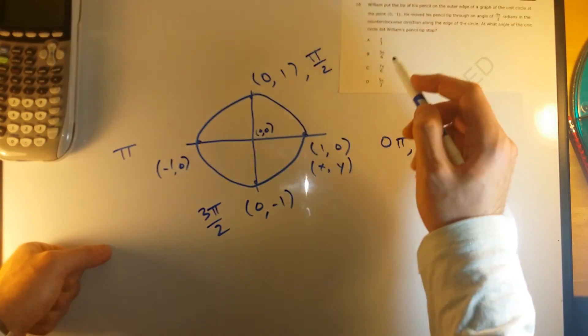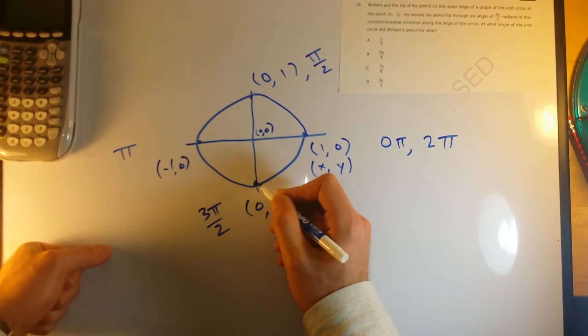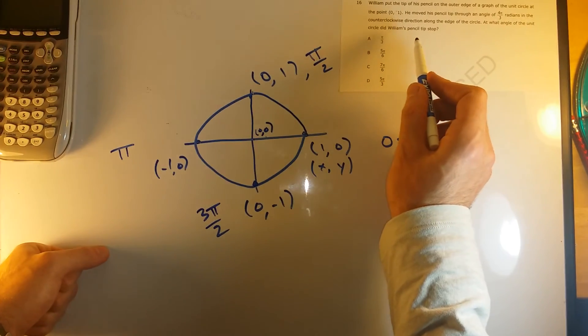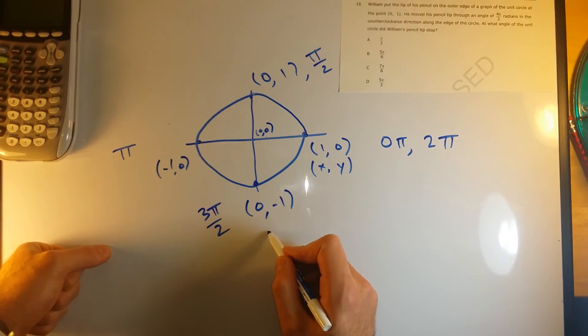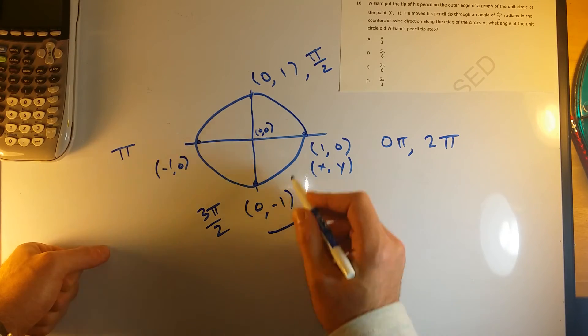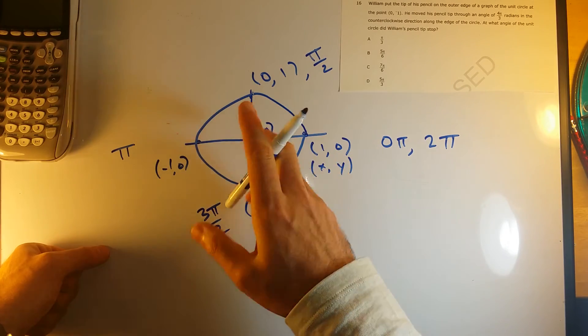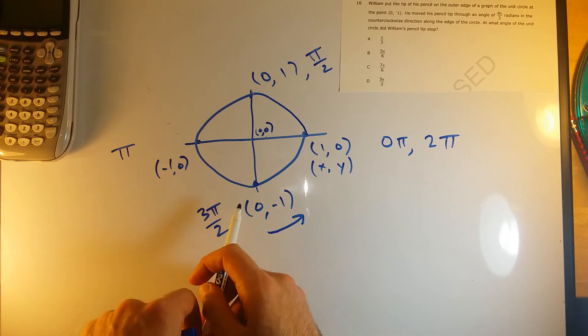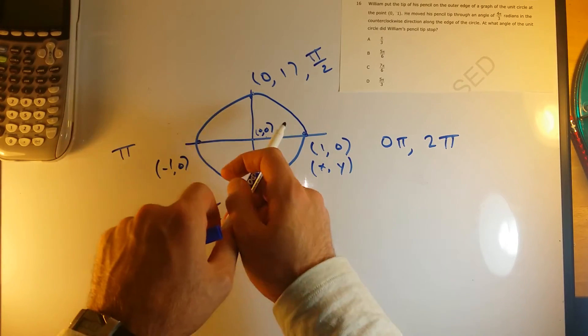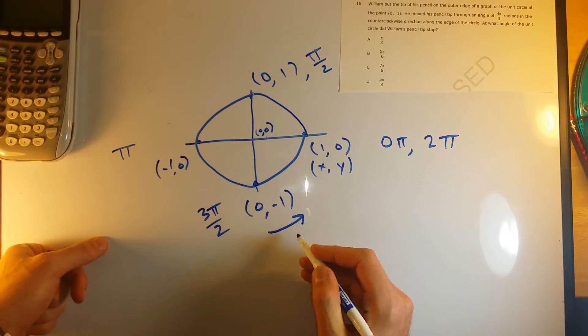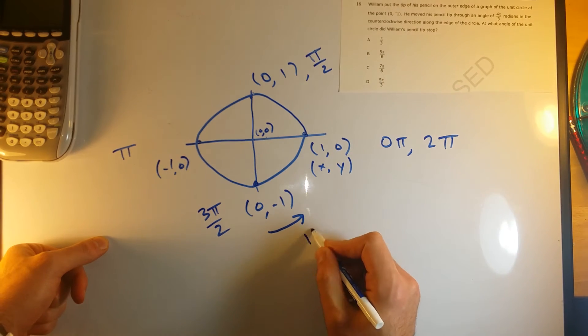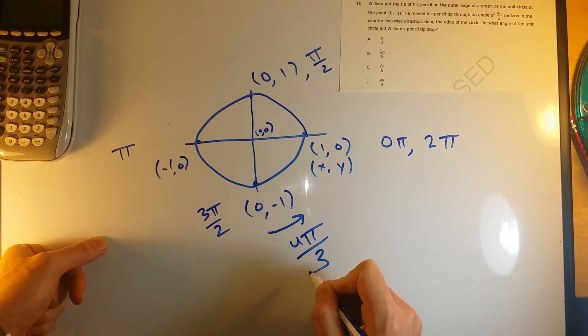So it's saying that we're starting at (0, -1). So we're starting right here, and we are going counter-clockwise. So we're going this direction. The clock moves tick, tick like this. So we're going counter-clockwise, we're going the opposite direction. We're going like this. And we're going 4π over 3 in that direction.